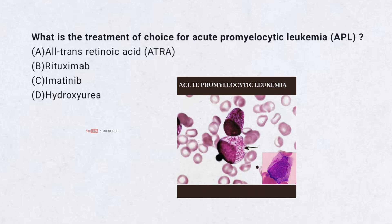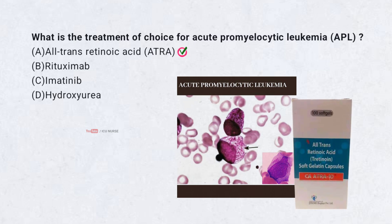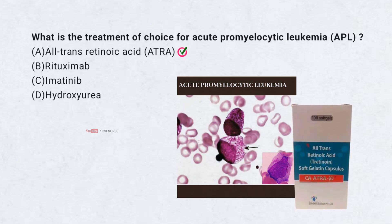What is the treatment of choice for acute promyelocytic leukemia (APL)? A. All-trans retinoic acid (ATRA), B. Rituximab, C. Imatinib, D. Hydroxyurea. Correct answer: A. All-trans retinoic acid (ATRA). ATRA induces differentiation of abnormal promyelocytes in APL.